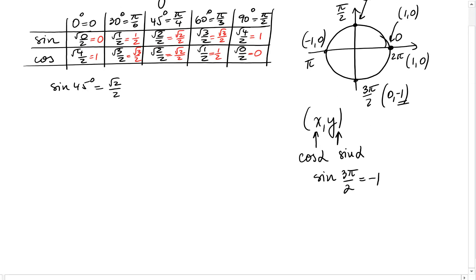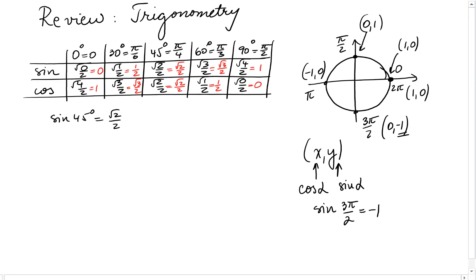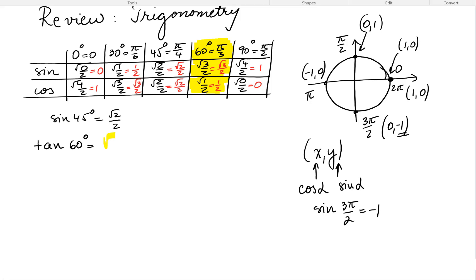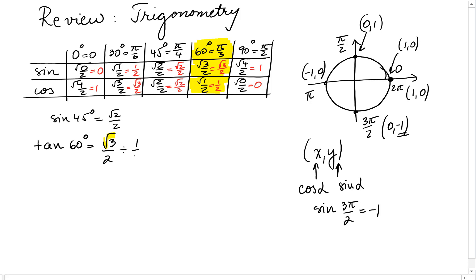Having this table, can we find tangent quickly? Tangent of a value like tangent of 60 degrees — just take a look at the table. Where is 60 degrees? Tangent means sine over cosine, so we get square root of 3 over 2 divided by 1 half, which is square root of 3 over 2 times 2 over 1, giving us square root of 3.